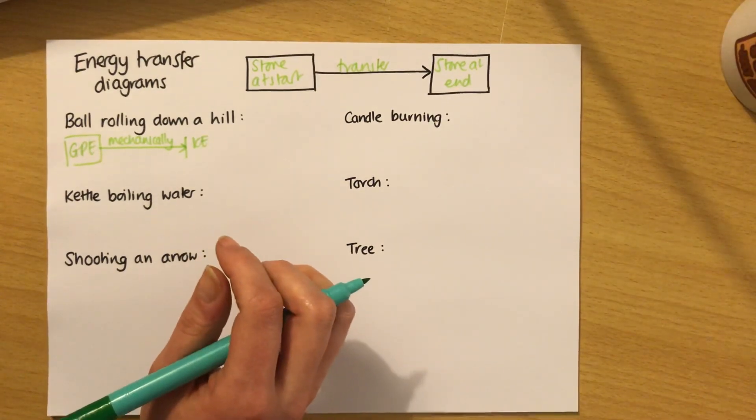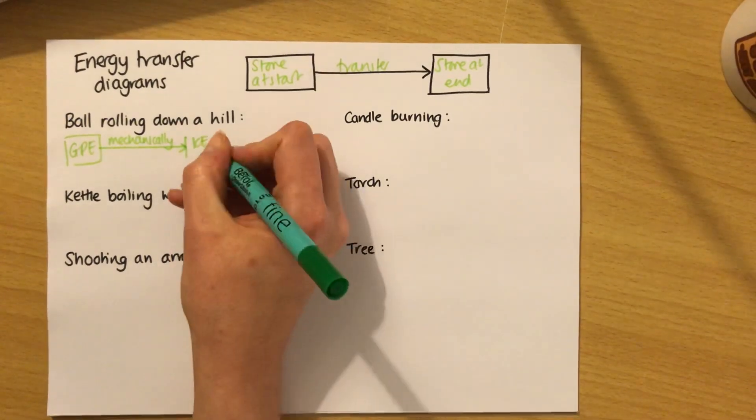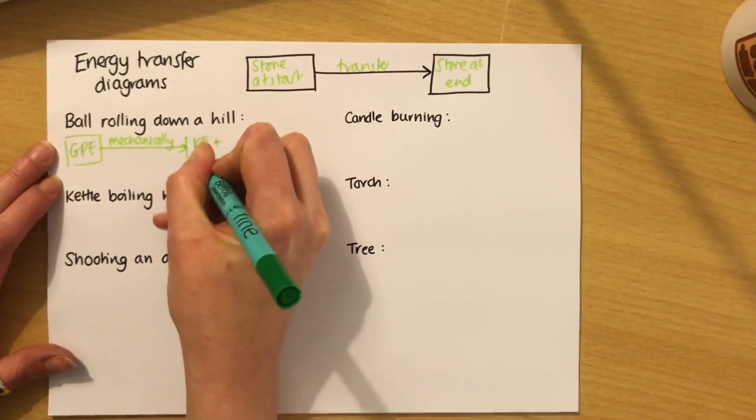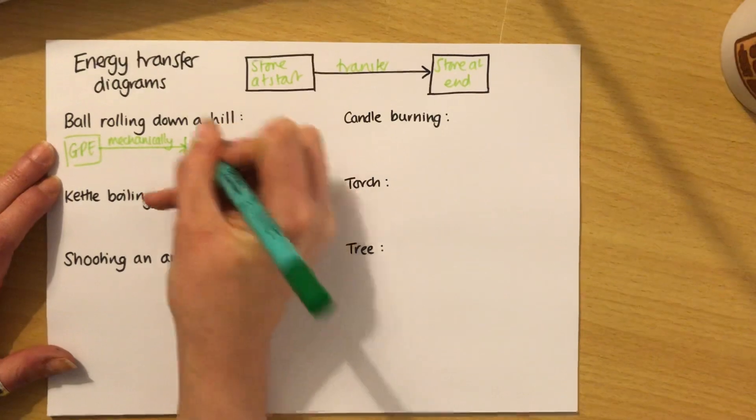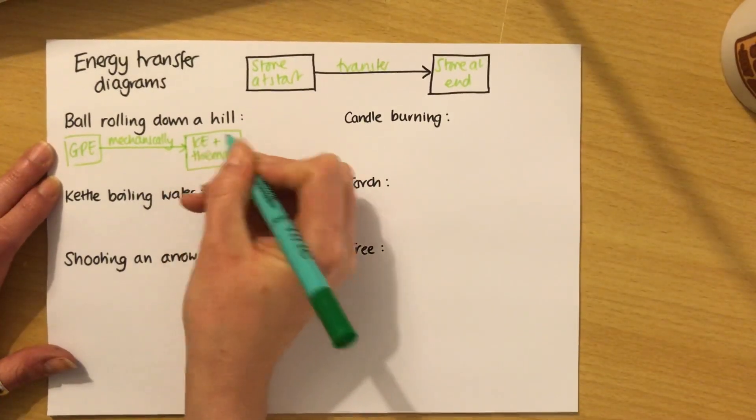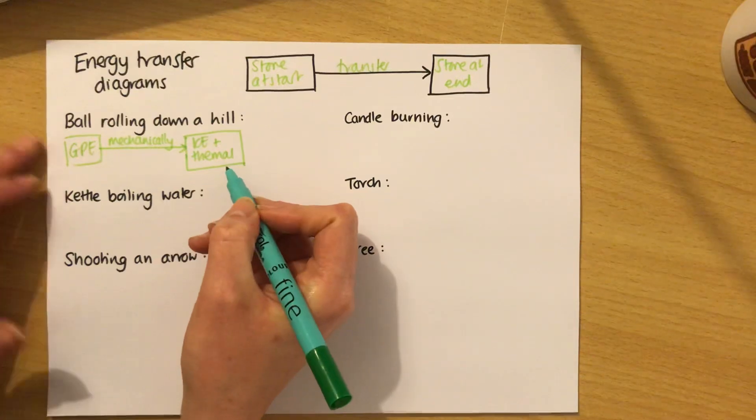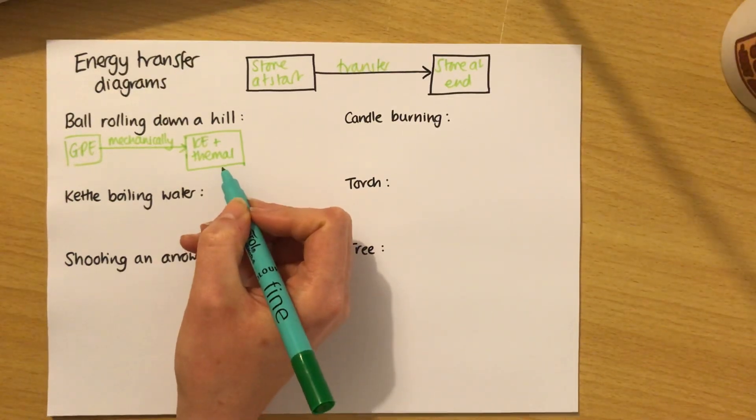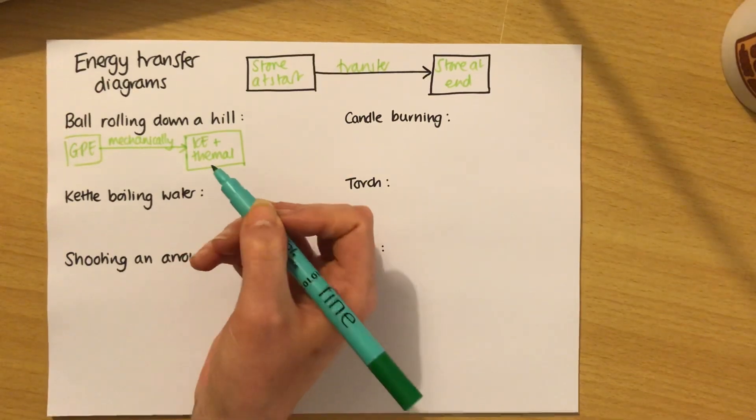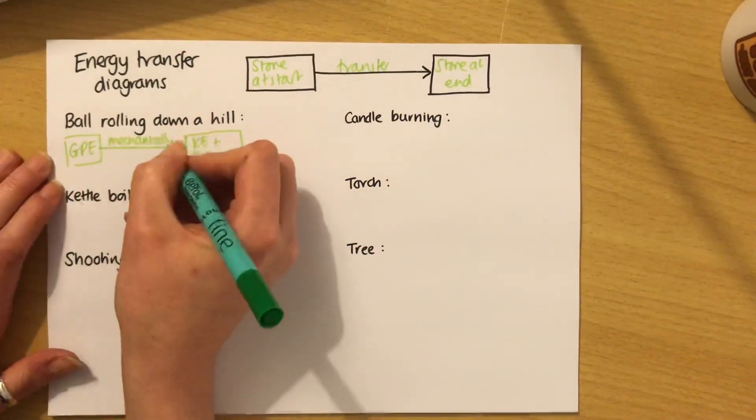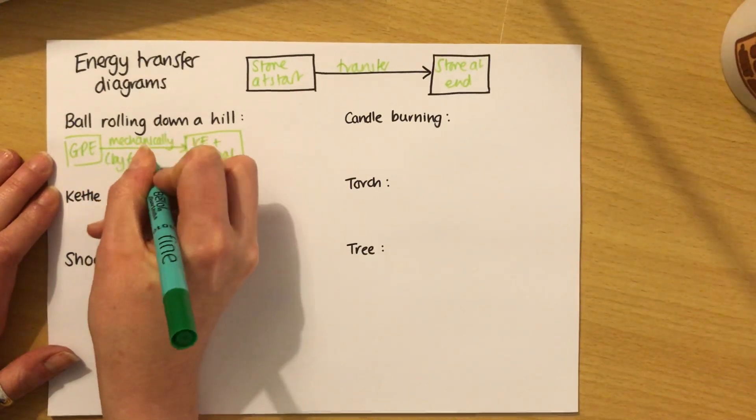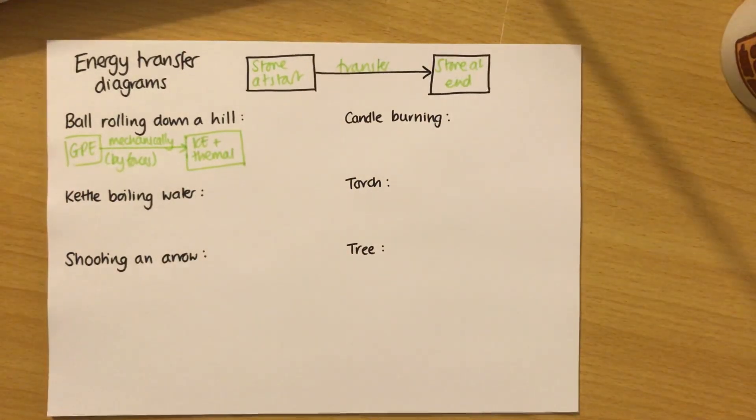But actually when you roll down a hill, there's a pesky little force called friction, and the friction will cause the ball to slow down because some of that energy is not going to go to KE. It's going to go to thermal energy of the surroundings and the ball. I could write KE and thermal. You could be specific and say KE of the ball, thermal of surroundings and the ball. This is because of friction. When we do work against friction, that's because of forces. So that also counts as mechanically or by forces.